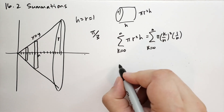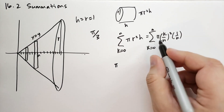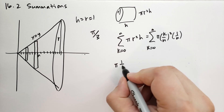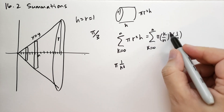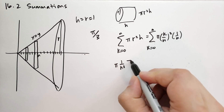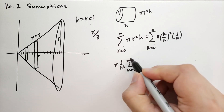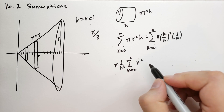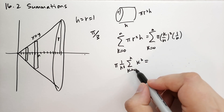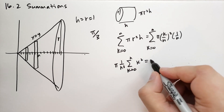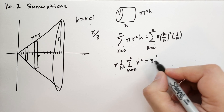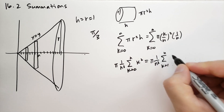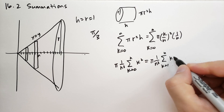We can separate out the things that aren't k. So we have pi, which is a coefficient of each term, and 1 over n cubed — we got n squared from the r squared term and n from the height term. And then we have the sum from k equals 0 to n of k squared. Because the first term k equals 0 is just 0, we can leave that out. So we have pi times 1 over n cubed times the sum from k equals 1 to n of k squared.